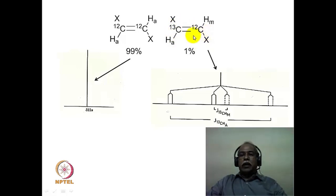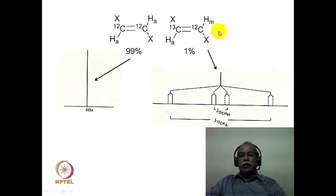One can ask: how come you don't have a molecule where both carbons are carbon-13? That would be much less abundant — 1% of 1%, meaning 0.01% of the molecules would have carbon-13 on both carbons. So it would not be possible to detect such a sample because of the very low abundance.